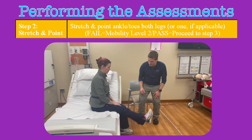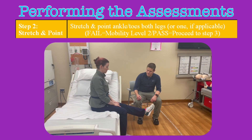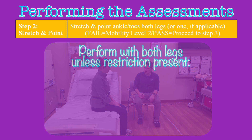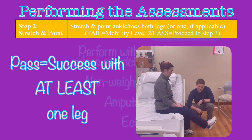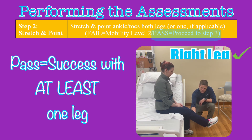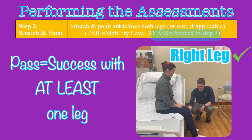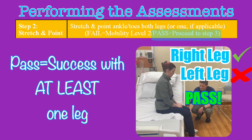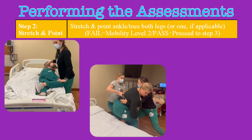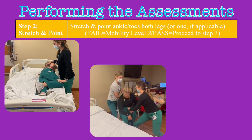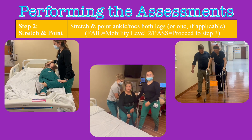Have the patient stretch and point with both legs, unless there is some restriction such as weight-bearing on one leg or the other, or amputation. If they complete this task with at least one leg, they pass step two. You may be thinking, how would you be able to walk with only one leg that can bear weight? But the BMAT isn't only about how to safely walk — mobilization is movement in bed, transferring from beds to chairs, commodes, stretchers, and it's ambulation. A person with one weight-bearing leg will transfer much differently than a patient with no weight-bearing ability.